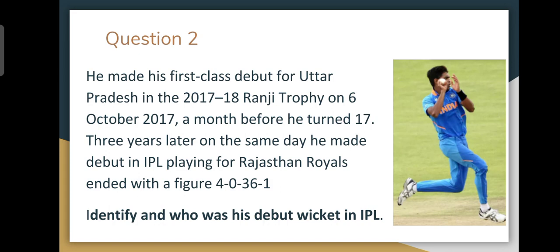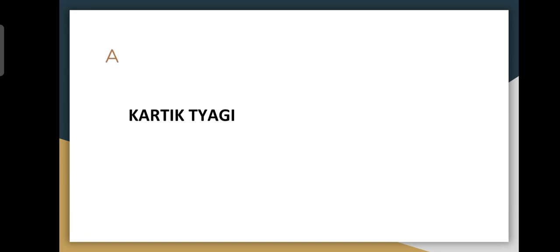Moving on to question number two — looking for the cricketer who made his IPL debut exactly three years after his Ranji debut, who ended with figures of 4 overs, 36 runs, 1 wicket on 6th October 2020. The answer is Karthik Tyagi, and his debut wicket in IPL was Quinton de Kock. The answer for the second part is Quinton de Kock.